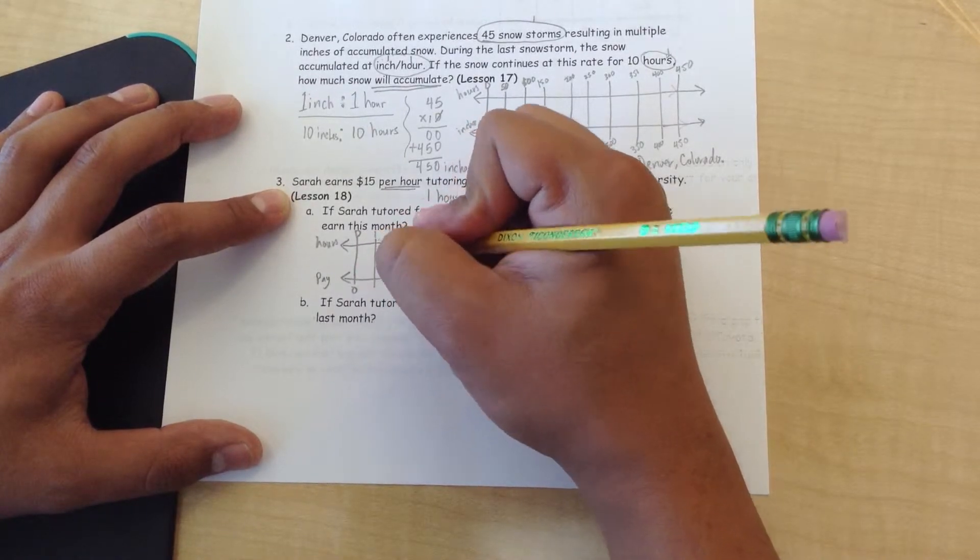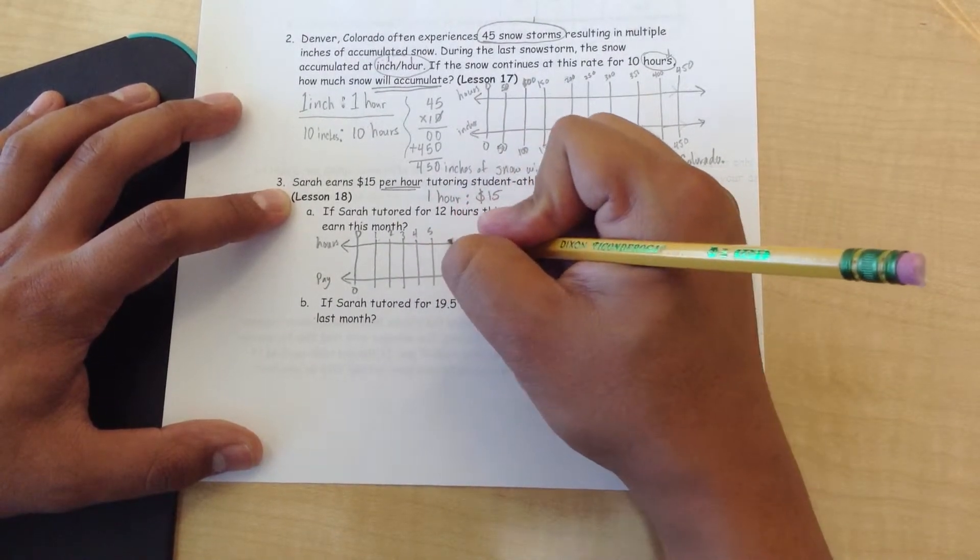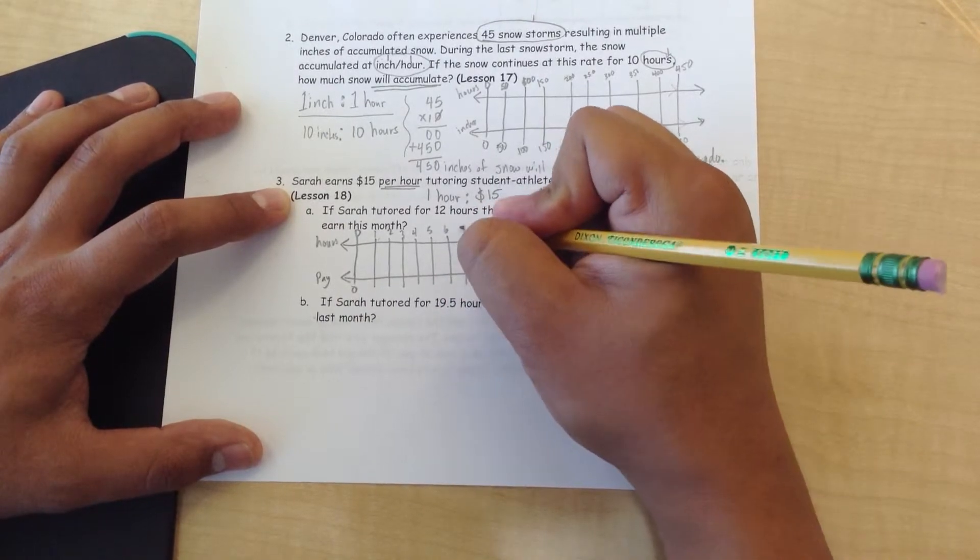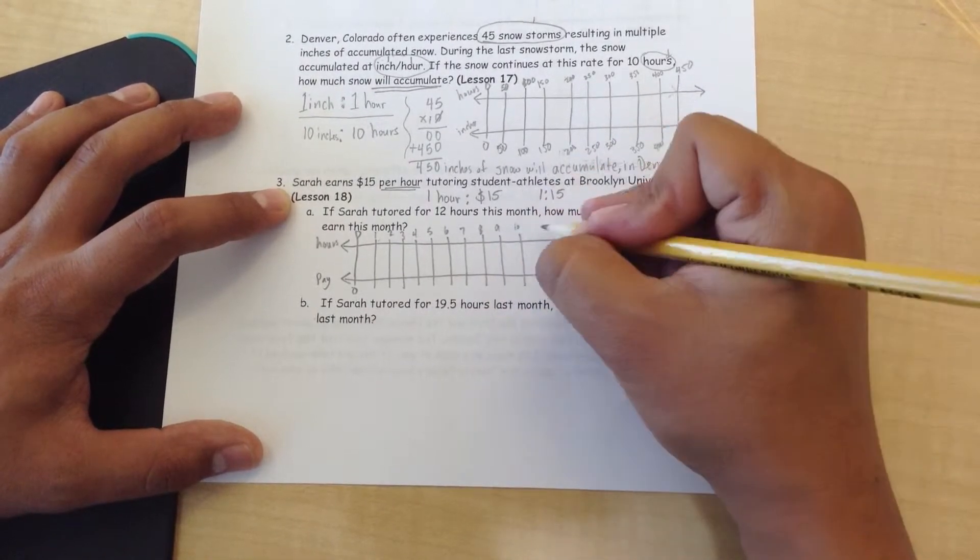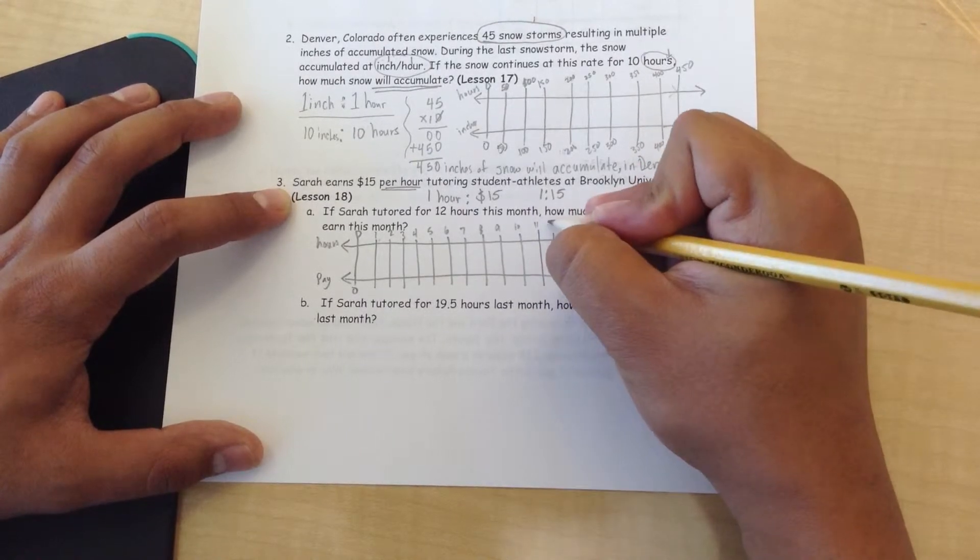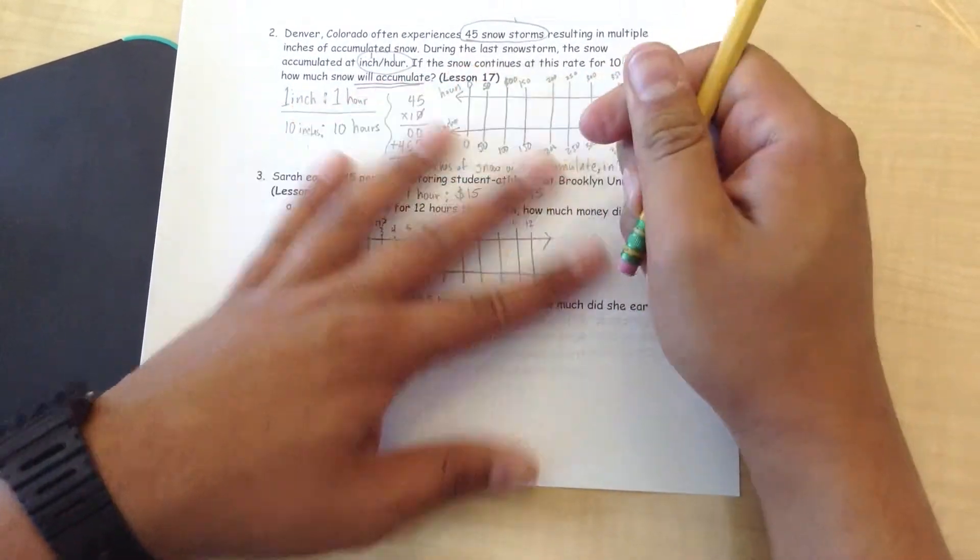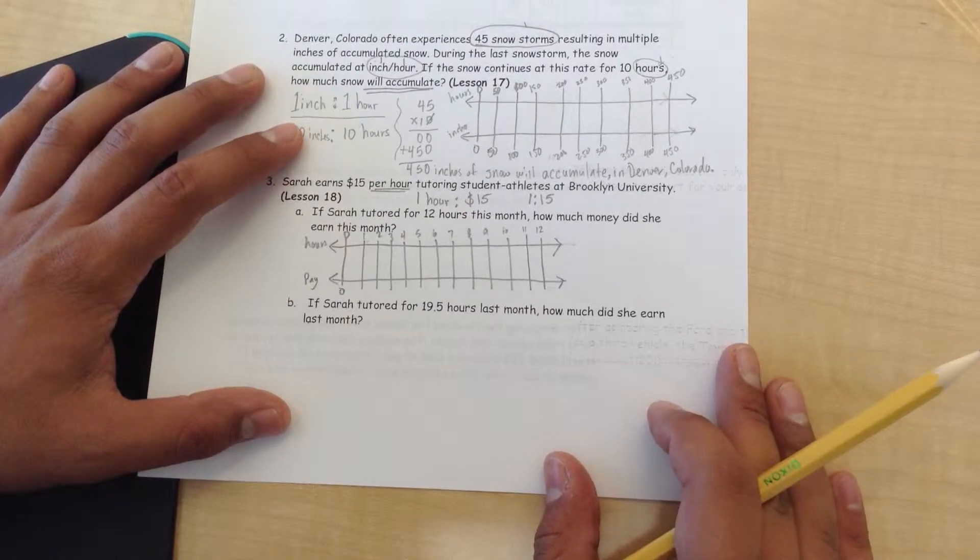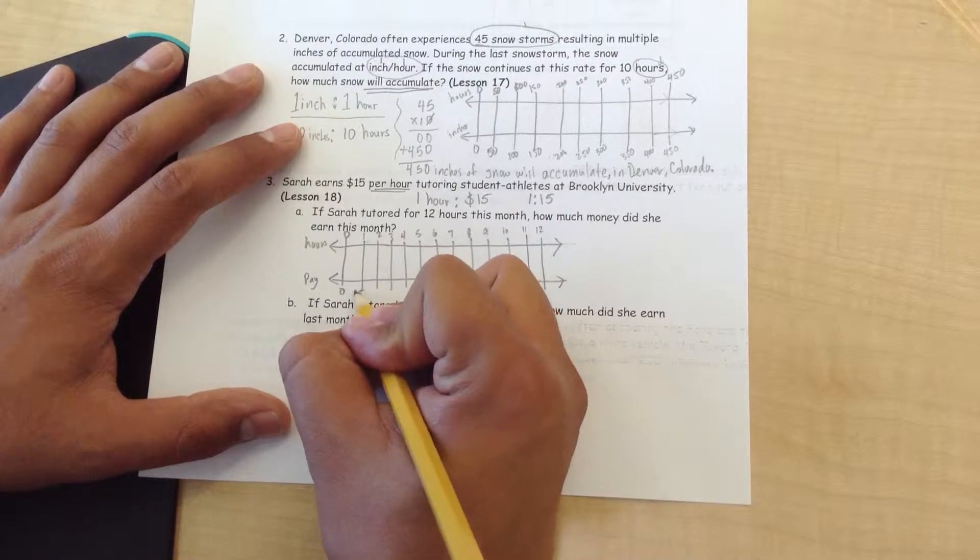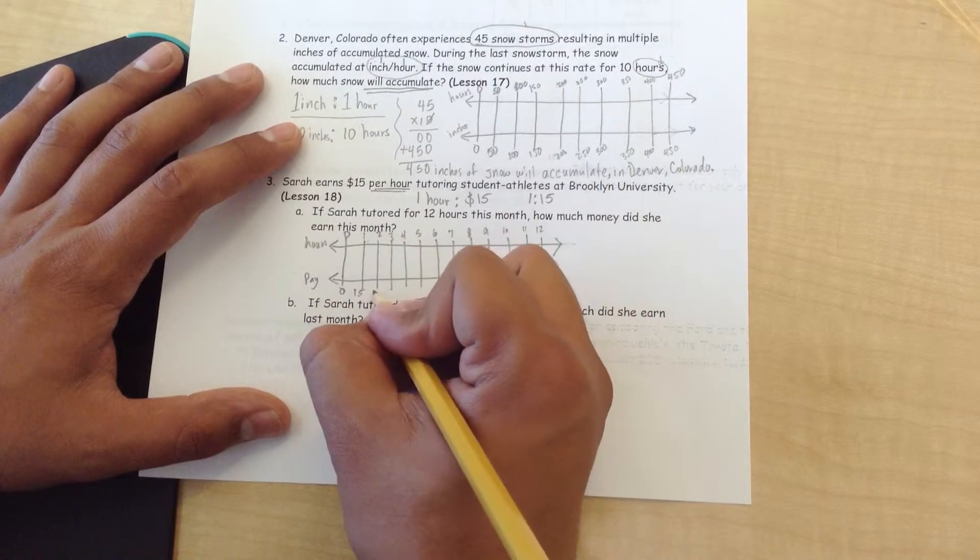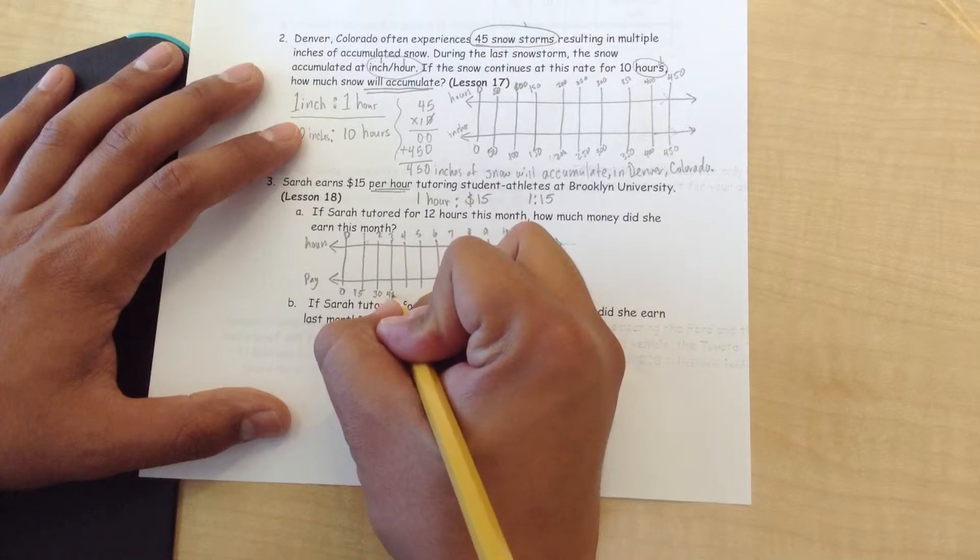1, 2, 3, 4, 5, 6, 7, 8, 9, 10, 11, 12. Okay, so if I know that she makes $15, that means for one hour, that means in two hours she'll make $30. For three hours, she'll make $45.